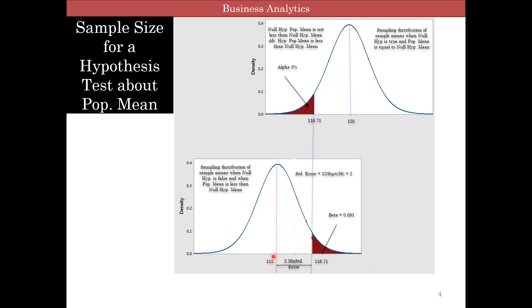Here is the alternate distribution. We are assuming the population mean in an alternate distribution is 112, where the average is less than the null hypothesis distribution. This assumes that the null hypothesis is false. Using the same 116.71, you can calculate your beta, which is 9.1% or 0.091%.